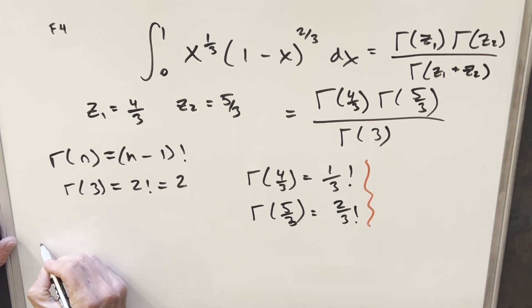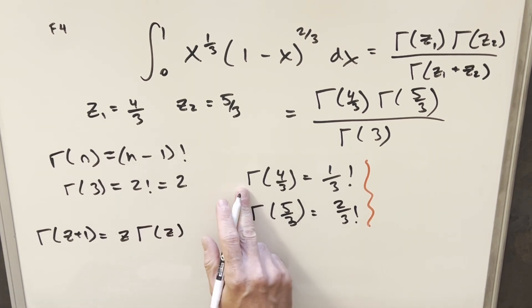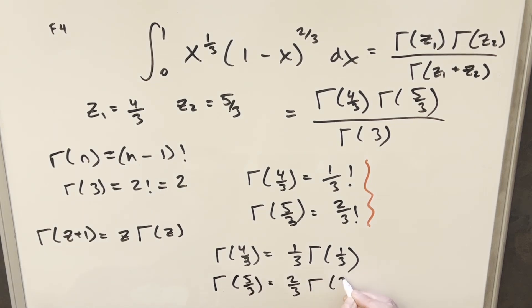So what I want to use for these is another formula. We have this formula that gamma of z plus 1 is going to be the same thing as z times gamma of z. And what that's going to allow me to do is reduce these a little bit. So for gamma of 4/3, we can write this as 1/3 times gamma of 1/3. And doing the exact same trick for gamma of 5/3, we can write this as 2/3 times gamma of 2/3.